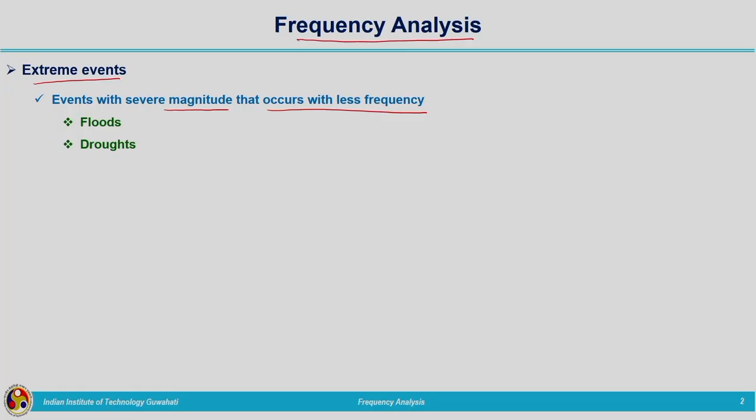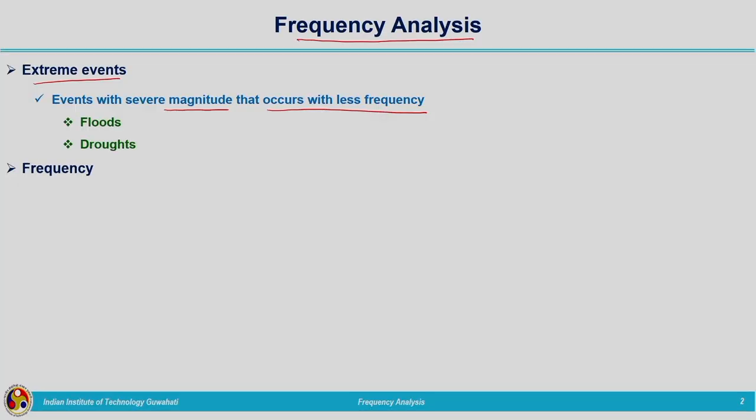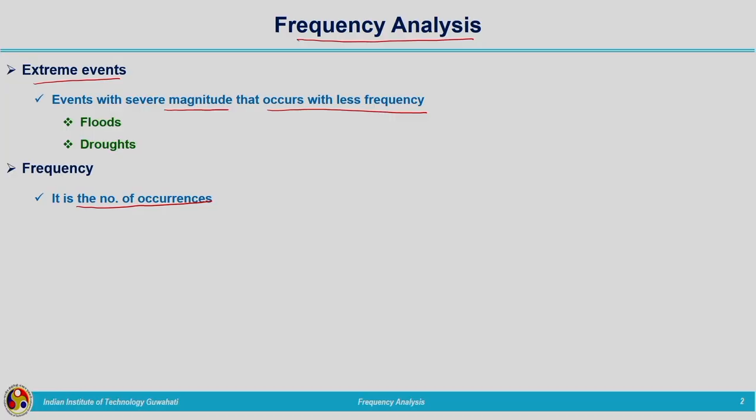During monsoon season we experience rainfall of different intensities or depth values. Not all rainfall values lead to flood events, and not all low rainfall values lead to drought events. There is a threshold value beyond which rainfall may lead to flooding, and a minimal value below which rainfall may lead to drought. Frequency is nothing but the number of occurrences — how many times a particular hydrologic event occurs is termed its frequency.